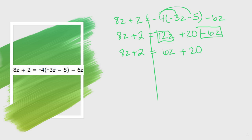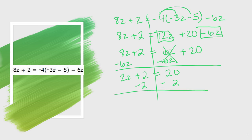So then I have plus 20. Now I've gone as far as I can working on each side separately, so now I need to combine my like terms and then solve. I'm going to move my 6z over to my 8z. That 6 is positive, so I have to subtract. It cancels out on this side, and 8 minus 6 is 2. So now I have 2z plus 2 equals 20. I need to move my 2 and my 20 together, so I subtract 2 — doing the opposite — and I have 2z equals 20 minus 2, which is 18.